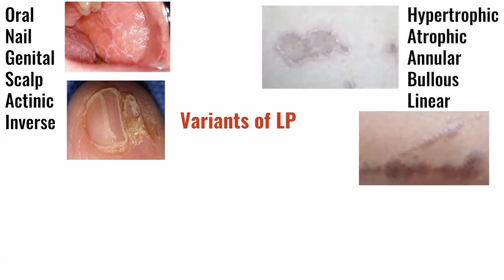Another broad category is based on the appearance of the lesions. You can have a hypertrophic form of lichen planus, an atrophic form, an annular form as shown here in this image, a bullous form, or a linear form.